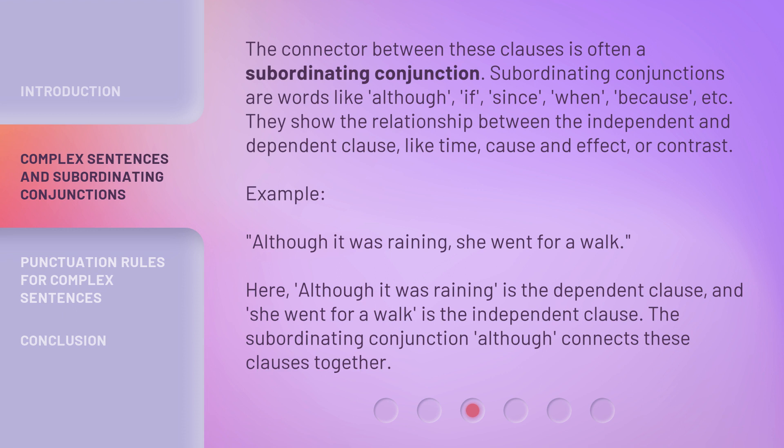Example: "Although it was raining, she went for a walk." Here, "although it was raining" is the dependent clause, and "she went for a walk" is the independent clause. The subordinating conjunction "although" connects these clauses together.